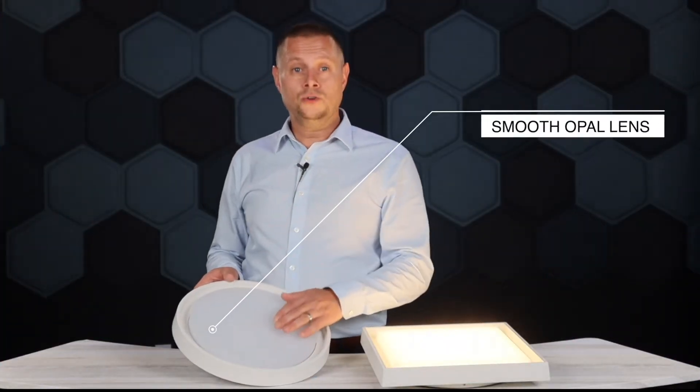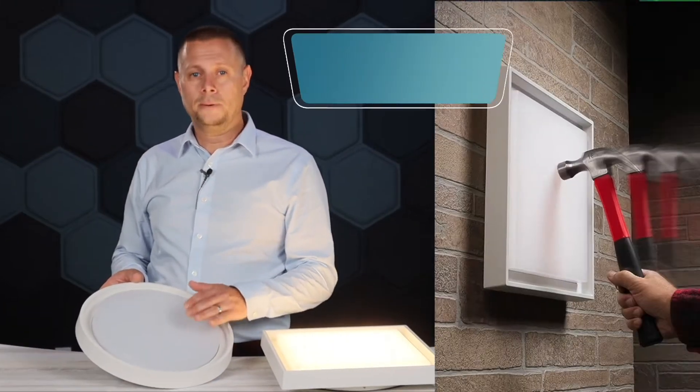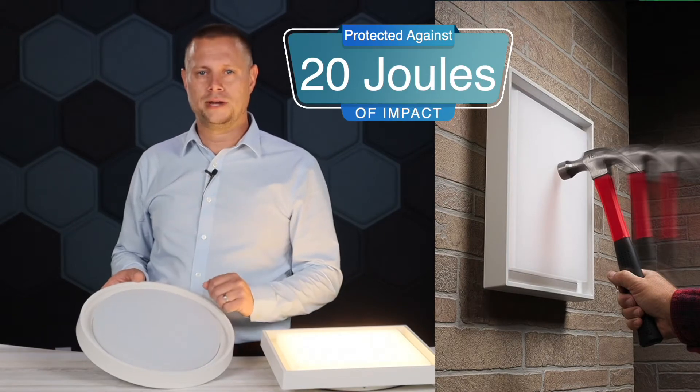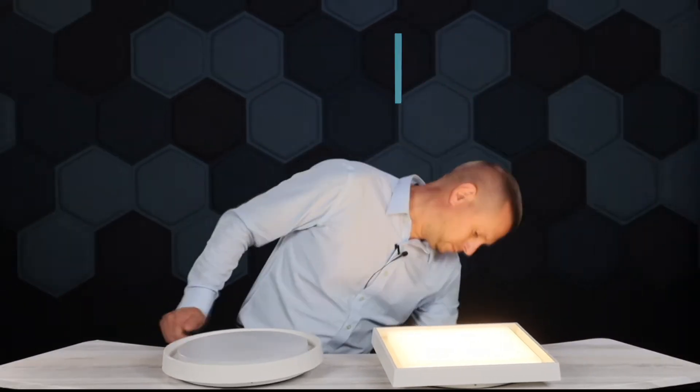The smooth opal lens is made of a UV stabilized polycarbonate and boasts an IK10 impact rating. Should I hit it with a hammer? Maybe not.